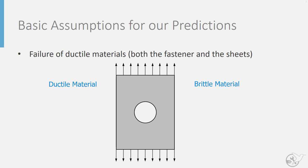Before we do that we need to cover a few basic assumptions for our predictions. The first very critical assumption is that we will only consider the failure of ductile materials, both in the fastener as well as the sheets. This can be illustrated with a picture of a sheet with a fastener hole in it under a tensile load, considering what would happen in a brittle material versus a ductile material.